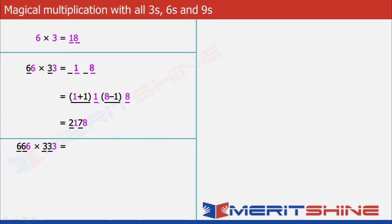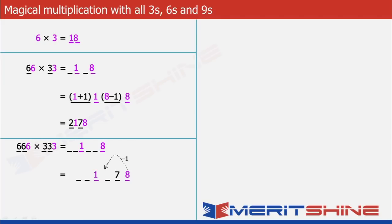Let us now try 666 × 333. Here again the process would be very similar. We will first write down 6 × 3 = 18 and add 2 blanks each to the left of 8 and 1. Now the 2 blanks to the left of 8 will be filled by decreasing 8 by 1, and the 2 blanks to the left of 1 will be filled by increasing 1 by 1.